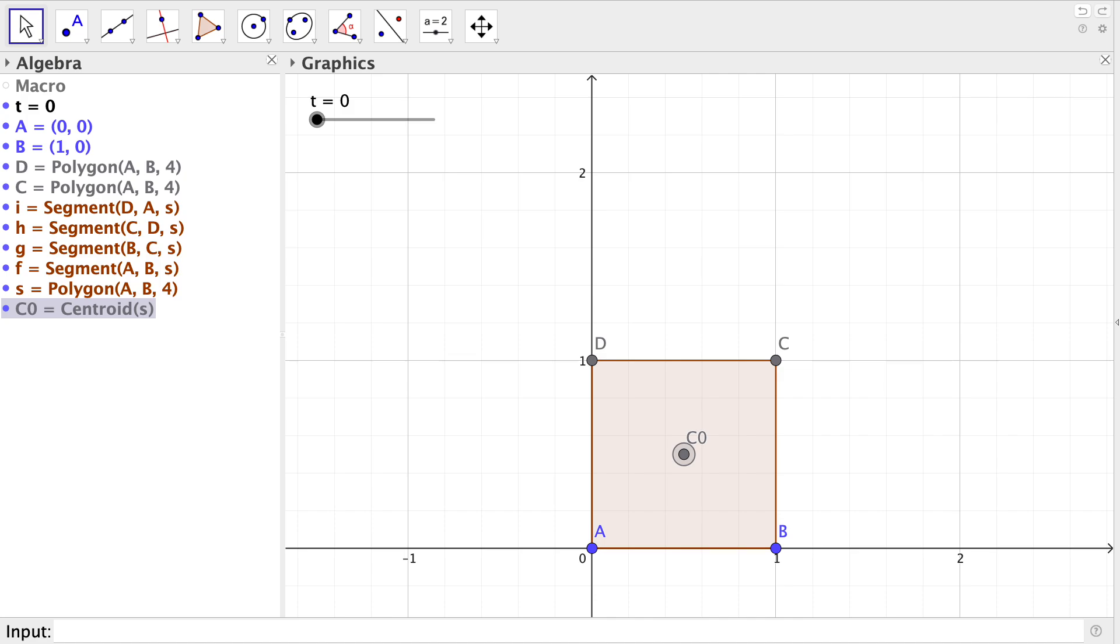Now we are going to define the centroid of the square with name S as C0 using the command centroid. Define a point F over a semicircle from point D to C, the top corners of our square, using the command point. Notice that I used the second argument in the command point where I introduce the slider T, so I can move point F as you can see here.